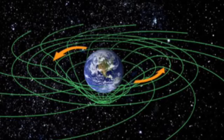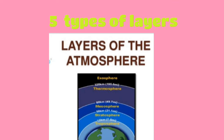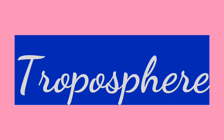In the atmosphere, there are five types of layers: troposphere, stratosphere, mesosphere, thermosphere, and exosphere. Let's see the first one, that is troposphere.